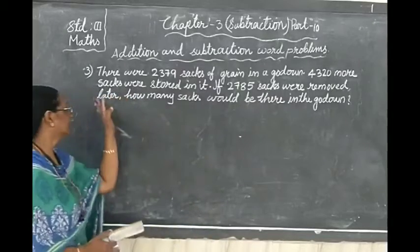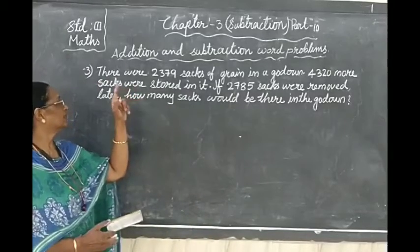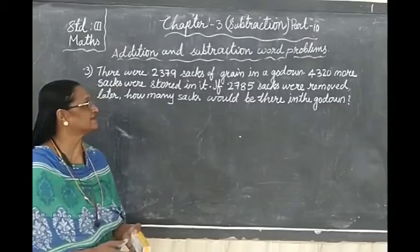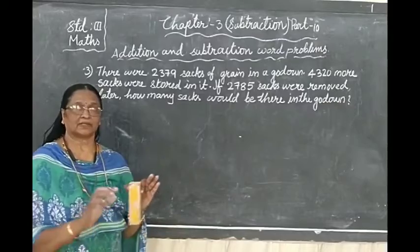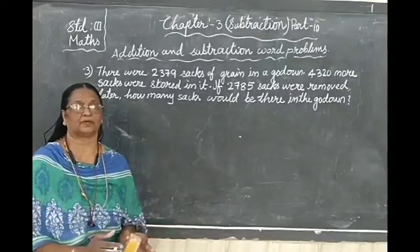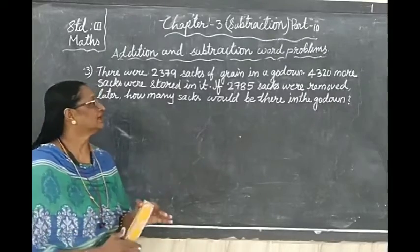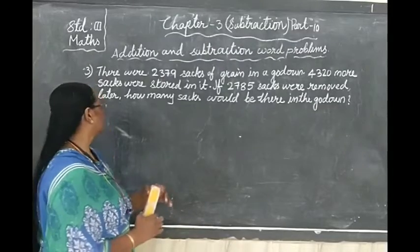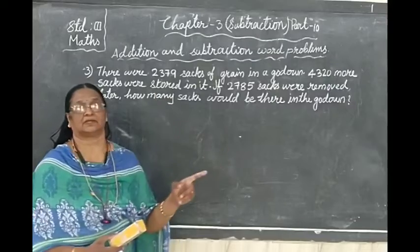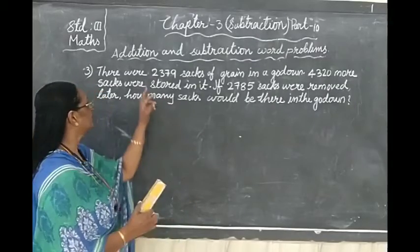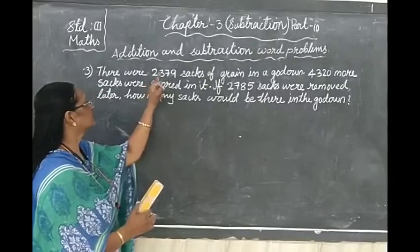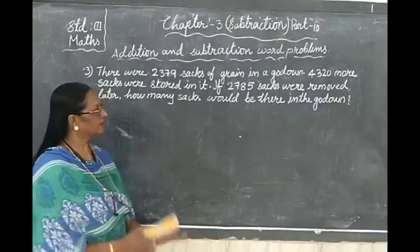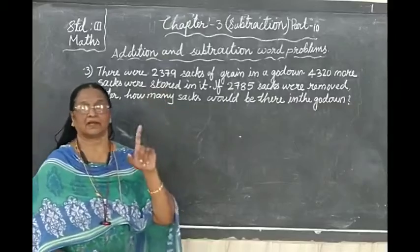Now read the verse. There were 2,379 sacks of things in a godown. Godown is the place where they store. 4,320 more sacks were stored in it. So first we have, 2,379 was there. Again added 4,320.